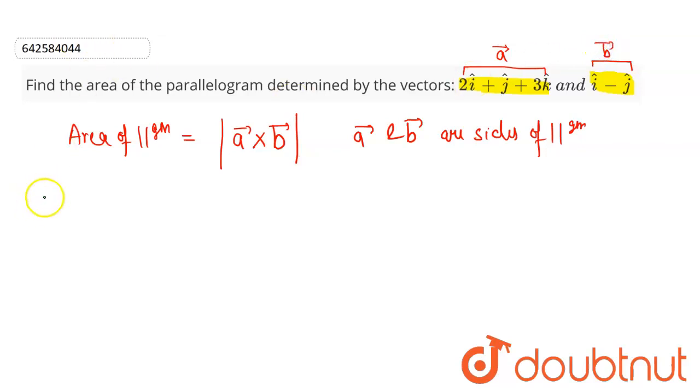So let us find the A vector cross B vector. This is equals to, it will be consisting of determinant. In row 1 it will be i cap, j cap, k cap. And in row 2 it will be consisting of coefficients of i cap, j cap and k cap of vector 1. So this will be 2, 1, 3. And in row 3 it will be consisting of coefficients of i cap, j cap and k cap of vector B. So this will be 1, minus 1 and 0.